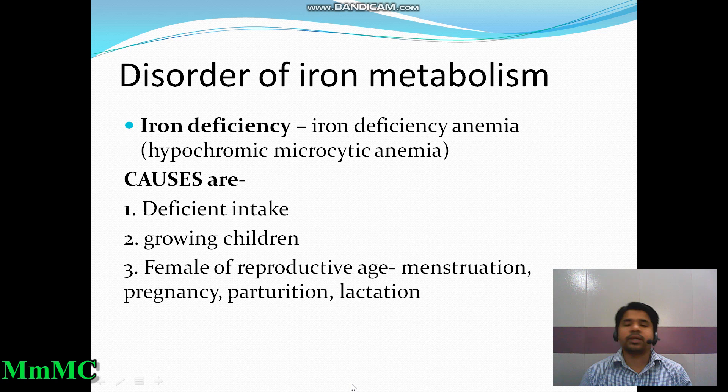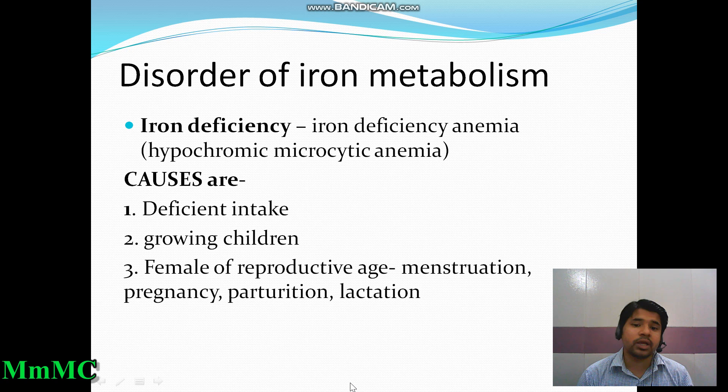The causes of iron deficiency include deficient intake, especially in growing children and females of reproductive age — during menstruation, pregnancy, parturition, and lactation. These are the main dietary and physiological causes of iron deficiency.